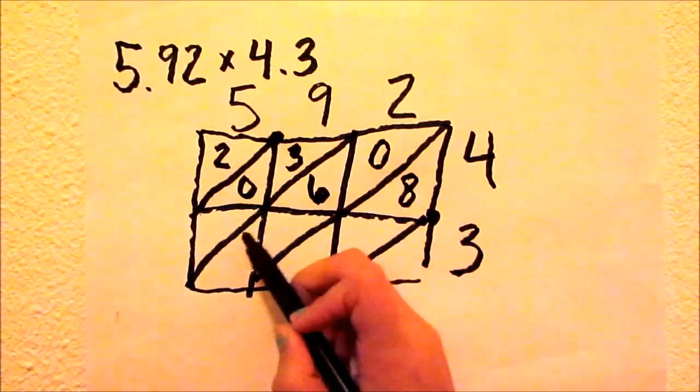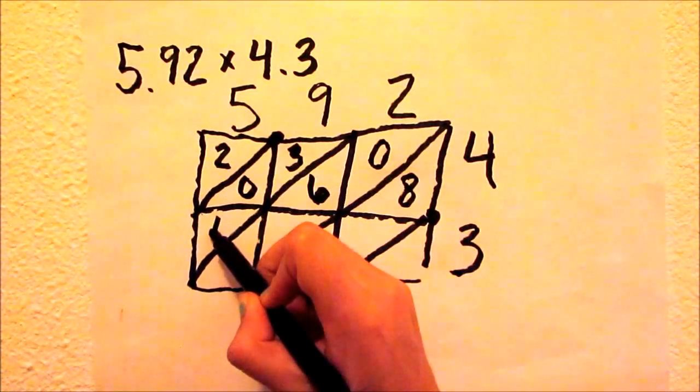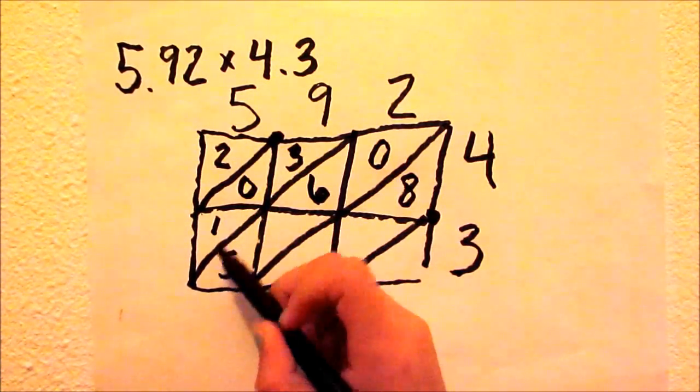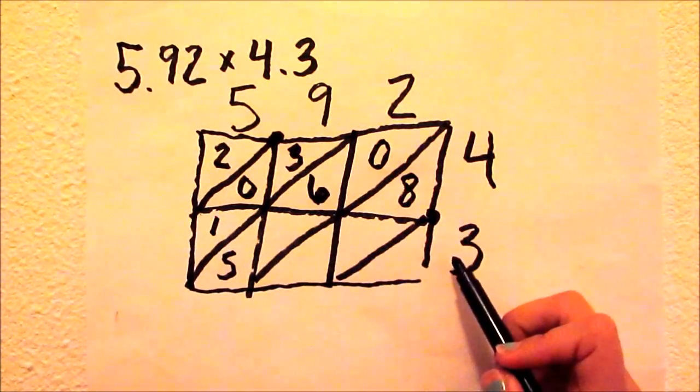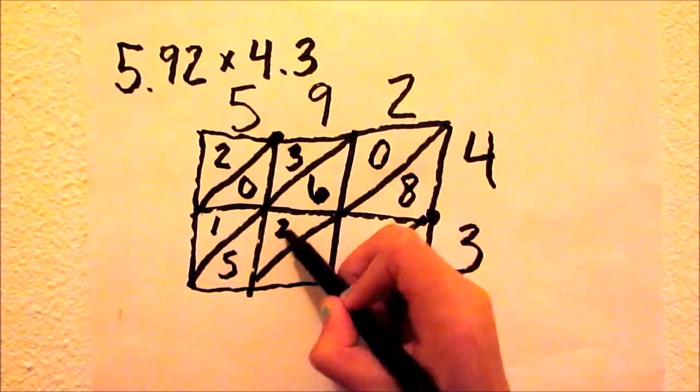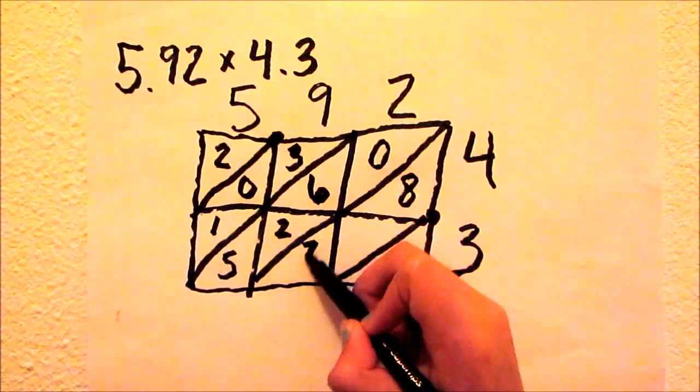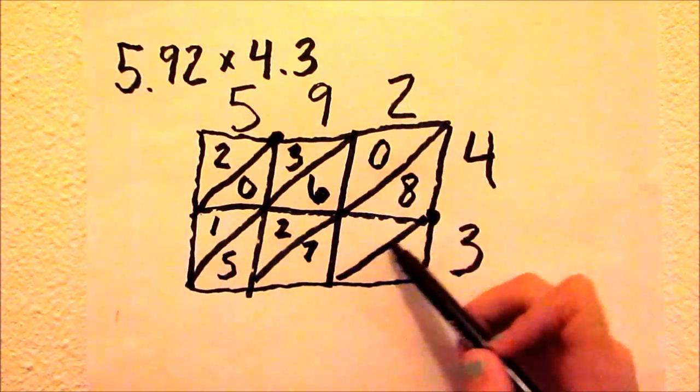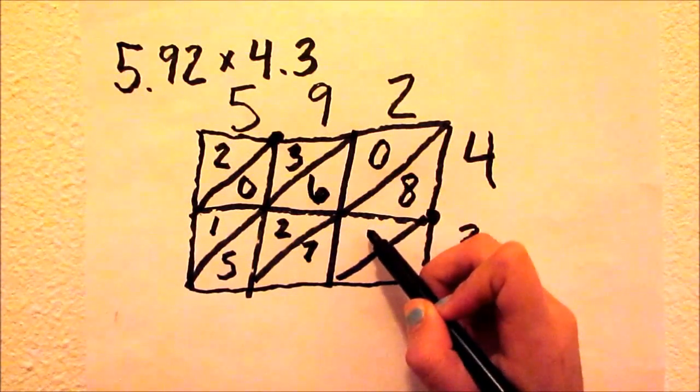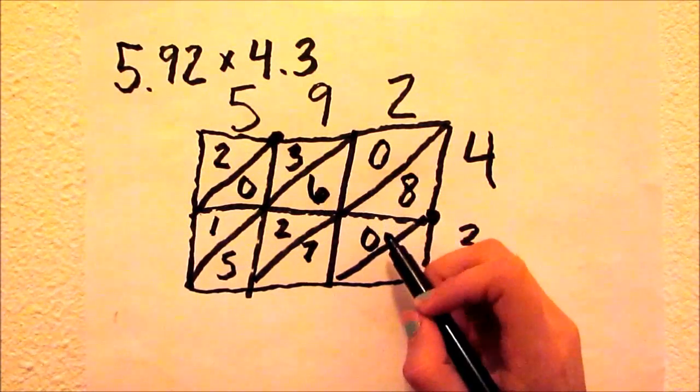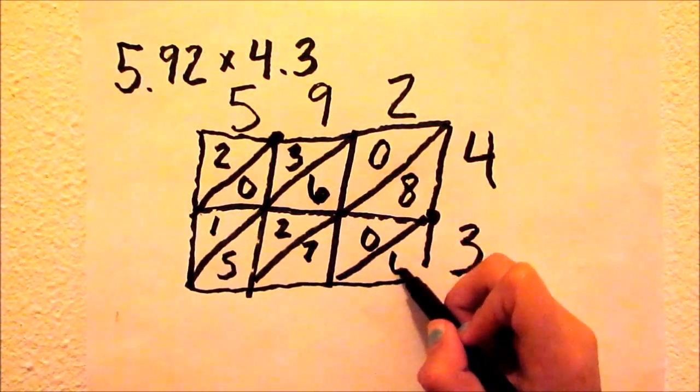5 times 3 would equal 15. So that's 1 for the tenths place and a 5 for the ones place. 9 times 3 is 27. So it's a 2 for the tenths place and 7 for the ones place. And 2 times 3 would equal 6. So that's 0 for the tenths place and 6 for the ones place.